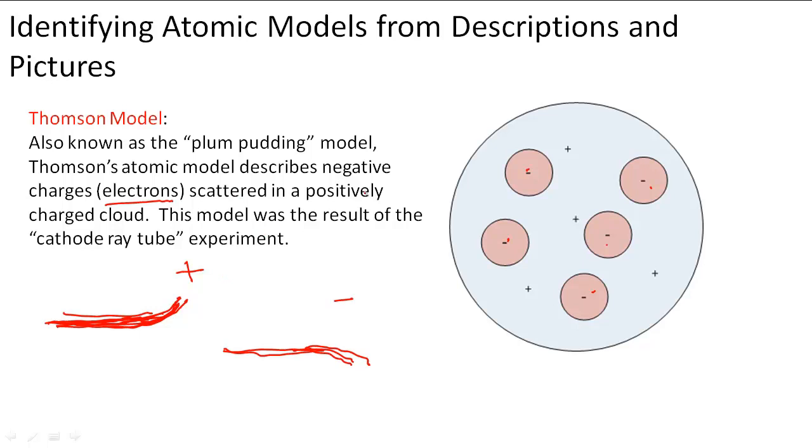And so there must be a part of the atom that has a negative charge. And that's how he came up with his plum pudding model. So remember, Thompson, plum pudding, electrons. That's going to help you remember that model.